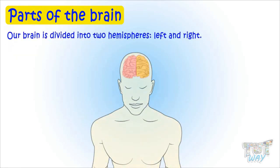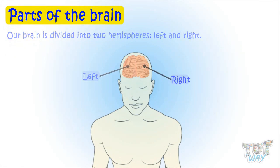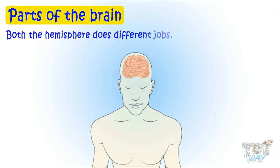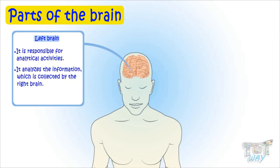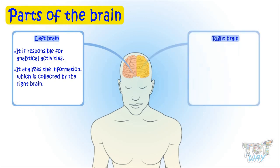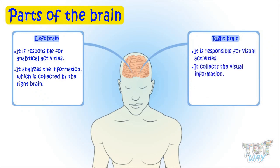Our brain is divided into two hemispheres: left and right. The left hemisphere is responsible for analytical activities — it analyzes the information collected by the right brain. The right brain is more responsible for visual activities, meaning it collects visual information.